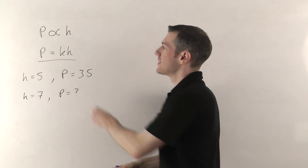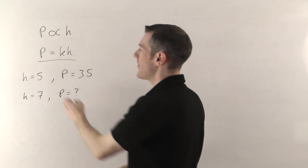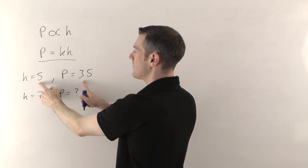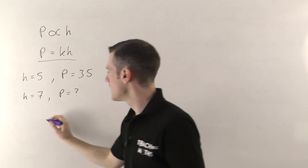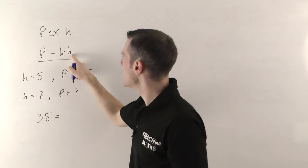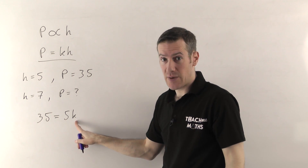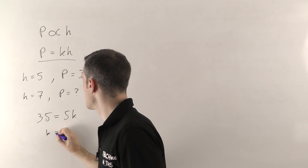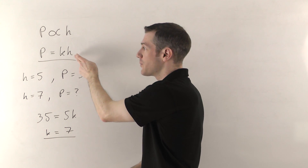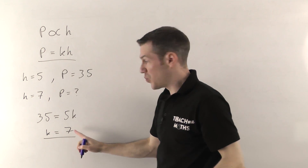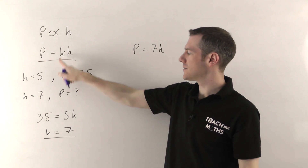The first thing you always have to do, having converted the proportional sign into an equation with K, is work out what K is. You replace h and P with the numbers they've given you. So P is 35 when h is 5, giving 35 equals K times 5. Rearrange by dividing both sides by 5: K is 35 divided by 5, which gives you 7. So once you've worked out K, replace it in the equation — P equals 7h.